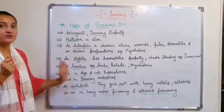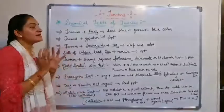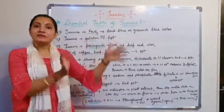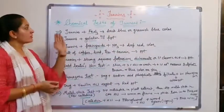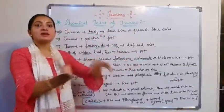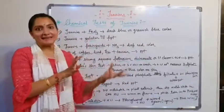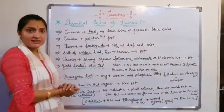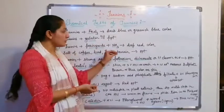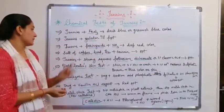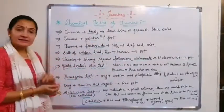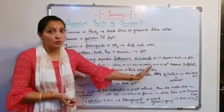So those are all the uses of tannins. Now, chemical tests for tannins. Tannins with FeCl3 give a dark blue or greenish-blue color, so with FeCl3 we can easily identify whether a drug contains tannins or not. Tannins in the presence of gelatin and NaCl give precipitates. Tannins give precipitates with salts of copper. Tannins with a strong solution of potassium chromate or 1% chromic acid also give precipitates.